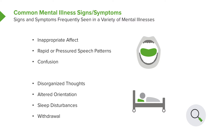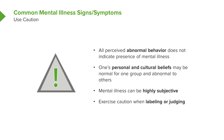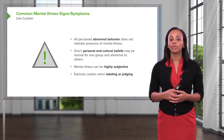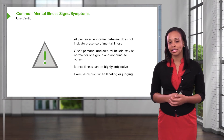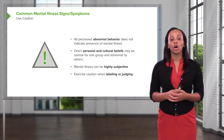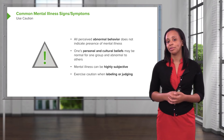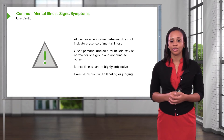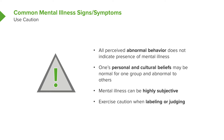Additional signs and symptoms include rapid or pressured speech patterns, confusion, disorganized thoughts, altered orientation — that is not knowing the person, place, time, or their birth date — and sleep disturbances. While reviewing common mental health illnesses, it's very important to be cautious: perceived abnormal behavior does not indicate the presence of a mental illness. One's own personal and cultural beliefs may affect their behaviors and may not be mental illness. Mental illness can be highly subjective, so avoid judging and using labels.